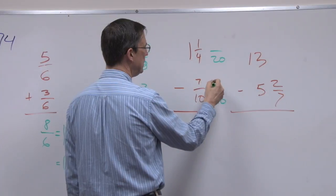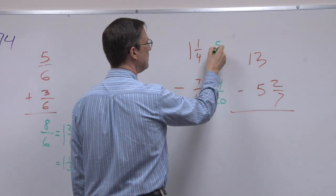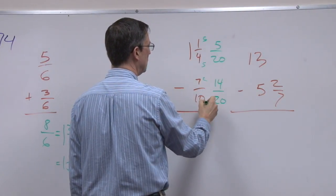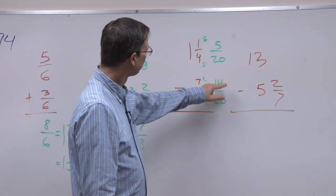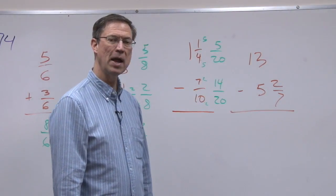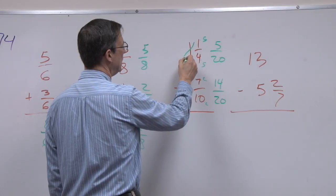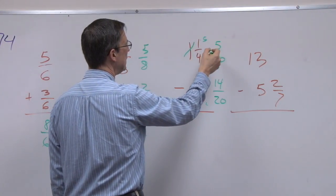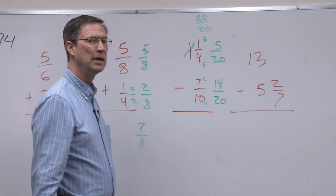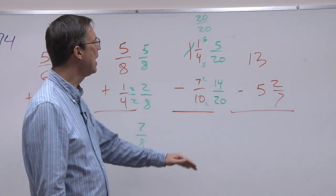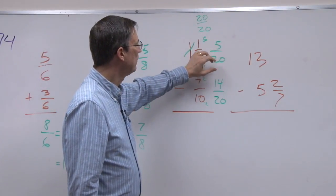So times 2, so 14, or 7 times 2 would be 14. 4 times 5 is 20, so I multiply the 1 times 5. Maybe I'll do that just as a reminder. 7 times 2, 4 times 5, 1 times 5. But I'm subtracting, I do have a common denominator, but I can't subtract 14 from 5. So we have to borrow from the 1. And what I'm actually borrowing is 20 over 20. Any number divided by itself is equal to 1.